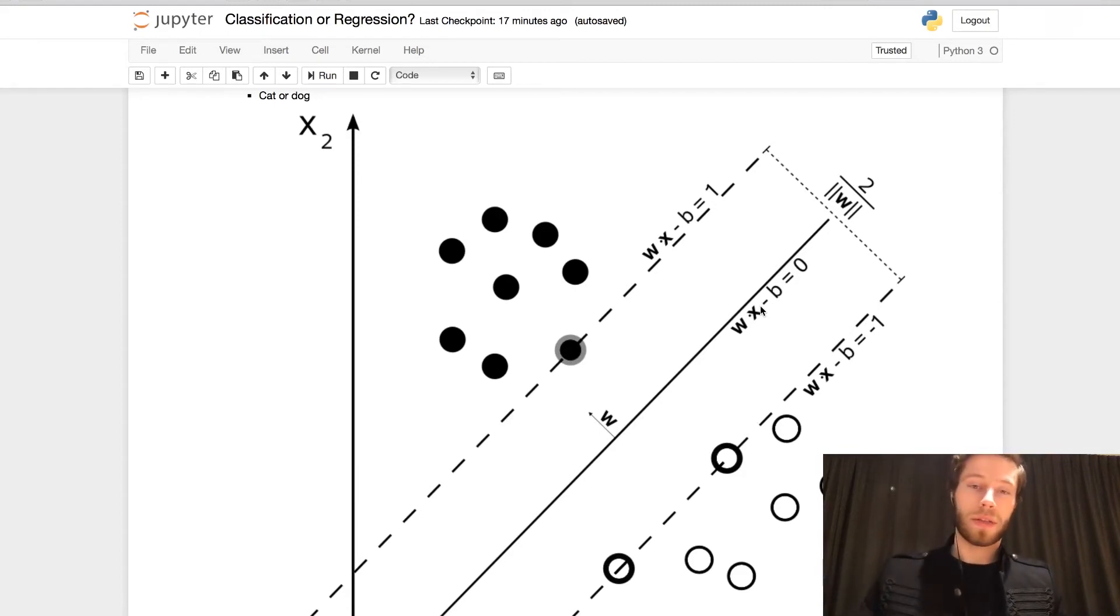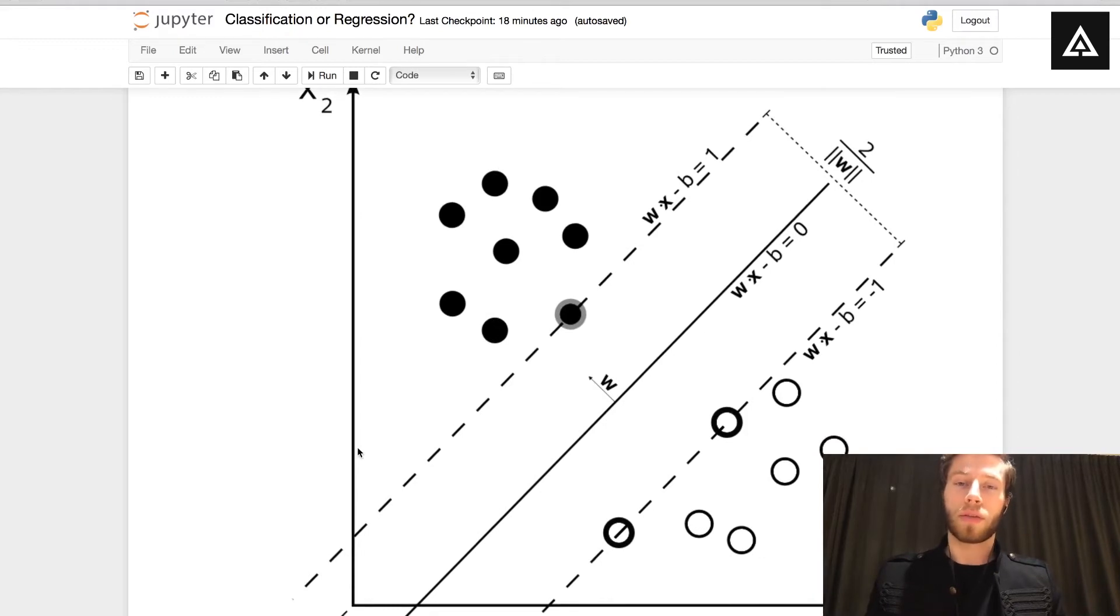So in this way this line here is able to distinguish between the two classes here that are represented as black and white dots. So this is classification and if you now feel sure about what classification is hit the like button so more people get this knowledge as well. Stay subscribed so you get all this knowledge for you so you get fully prepared.